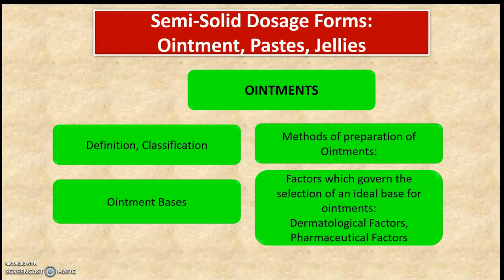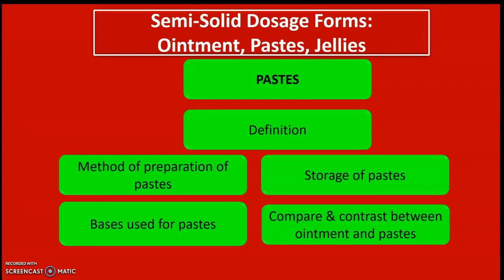The next chapter is Semi-Solid Dosage Forms covering ointments, pastes, and jellies. For ointments, the important points are: definition of ointment, classification of ointment, classification of ointment bases, methods of preparation of ointments, and the factors which govern the selection of an ideal base for ointments — specifically the dermatological factors and pharmaceutical factors.